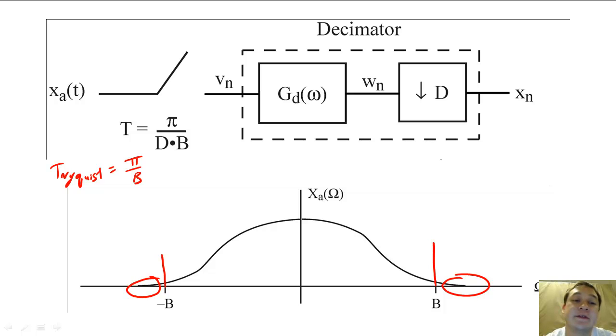we can either low-pass filter the signal with an analog filter, or we can use an oversampling A to D converter to eliminate aliasing.